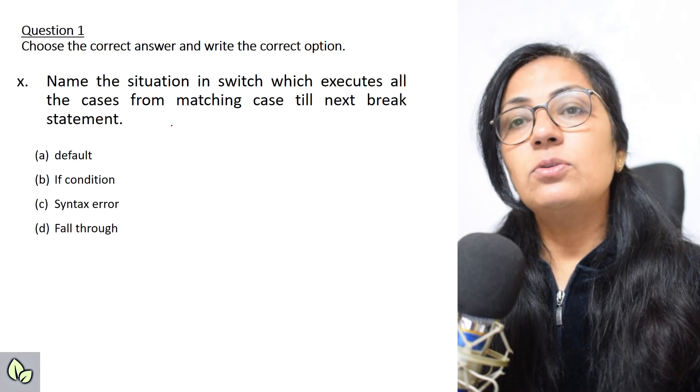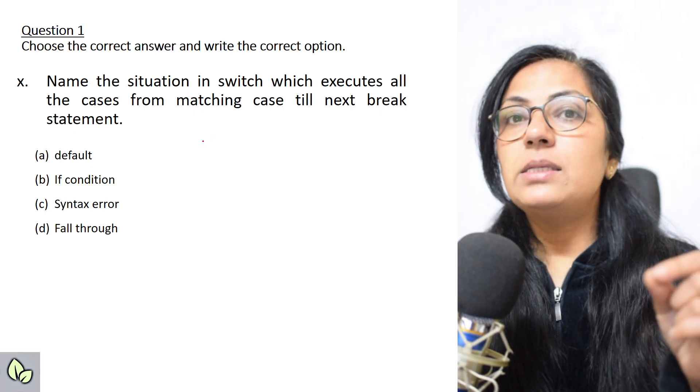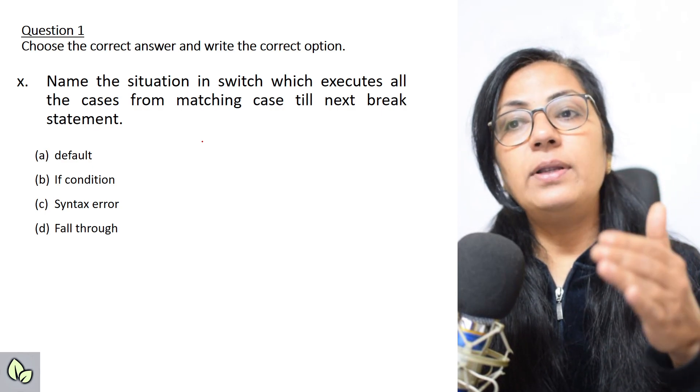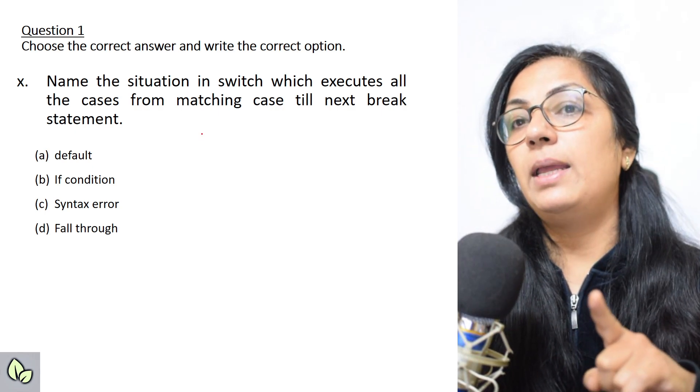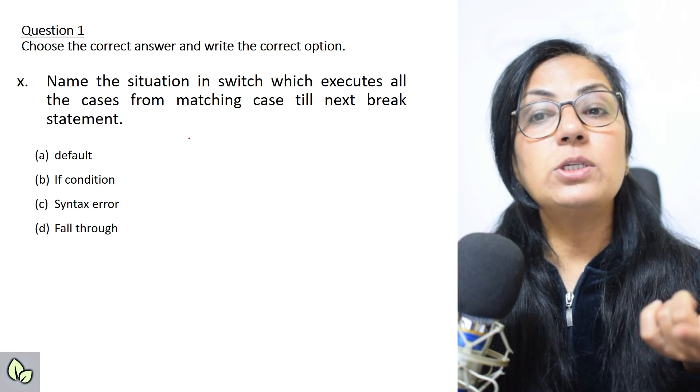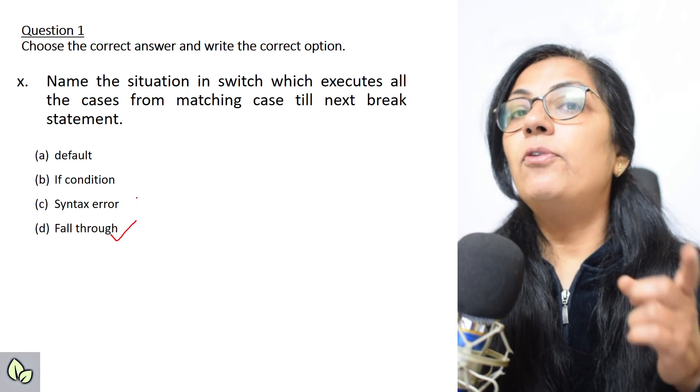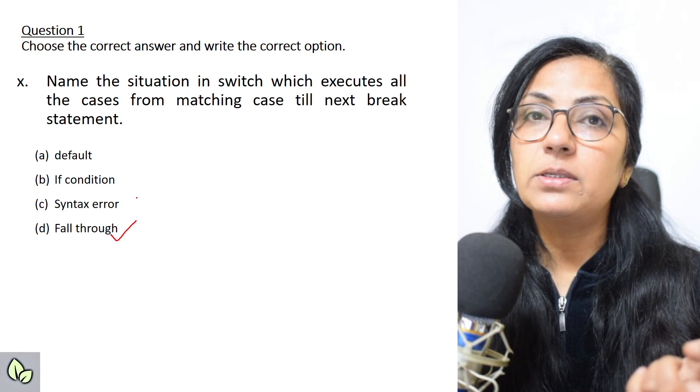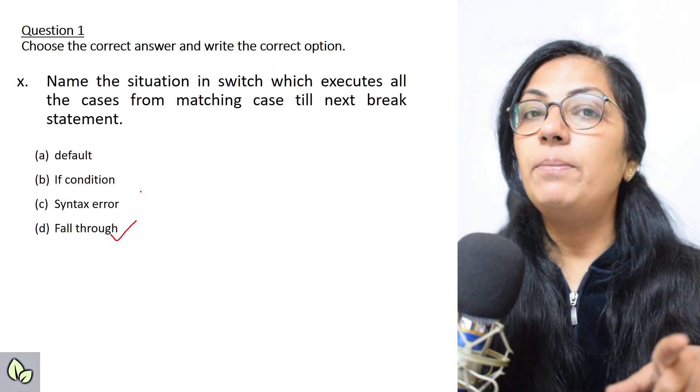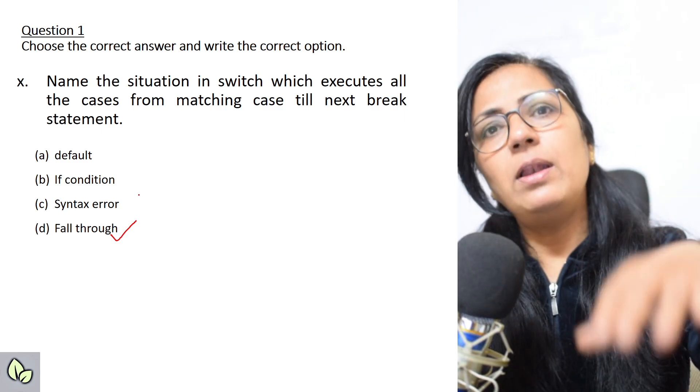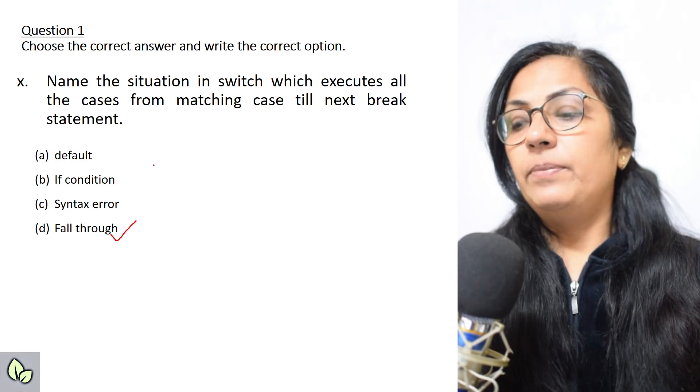Name the situation in switch which executes all the cases from matching case till next break statement. If case 3 is correct, after that all the statements will be executed until we get the break statement. So what is that situation called? That is called fall through. The question can come like this also: define fall through situation. So fall through situation occurs in absence of break statement, where all the statements starting from the matching case are executed till we get the break statement. Fall through means it will fall into another statement till we get the break statement to stop that.